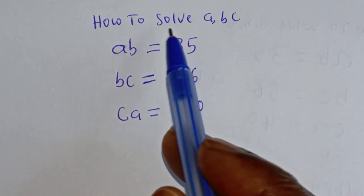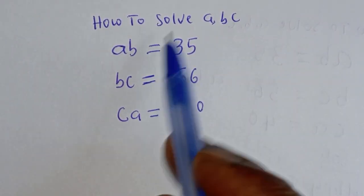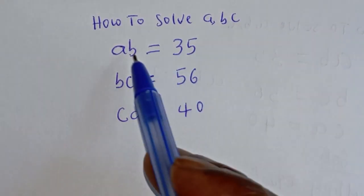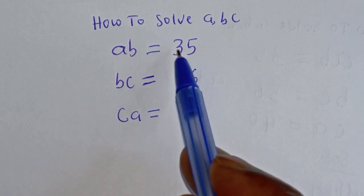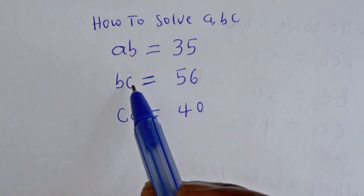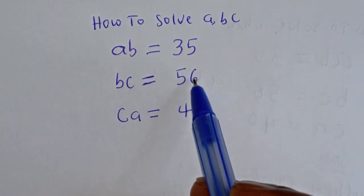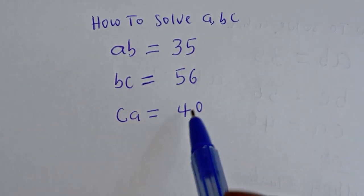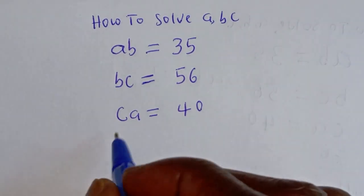Hello, welcome to MathGest. How to solve ABC from this given equation? AB is equal to 35, BC is equal to 56, and CA is equal to 40.